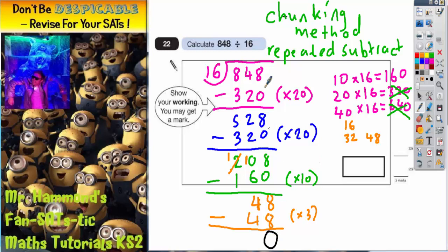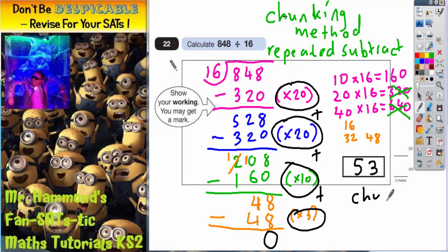Now the whole point of chunking is that once you get down to 0, you simply add up all your chunks. So we need to add this chunk of 20, to this chunk of 20, to this chunk of 10, to this chunk of 3. So we're adding them all together. So 20 plus 20 is 40, plus 10 is 50, plus 3 is 53. So the final answer is 53. So there are 53 chunks of 16 in 848. That's what it means. How many 16s go into 848? 53.